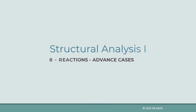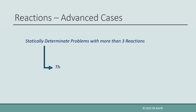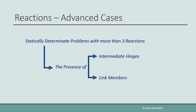Today we'll show how to evaluate support reactions for problems having more than three unknowns. To solve determinate structures with more than three reactions, we need to have additional equilibrium equations. This can be obtained by the presence of intermediate hinges. Also, the presence of link members will provide additional equilibrium equations.